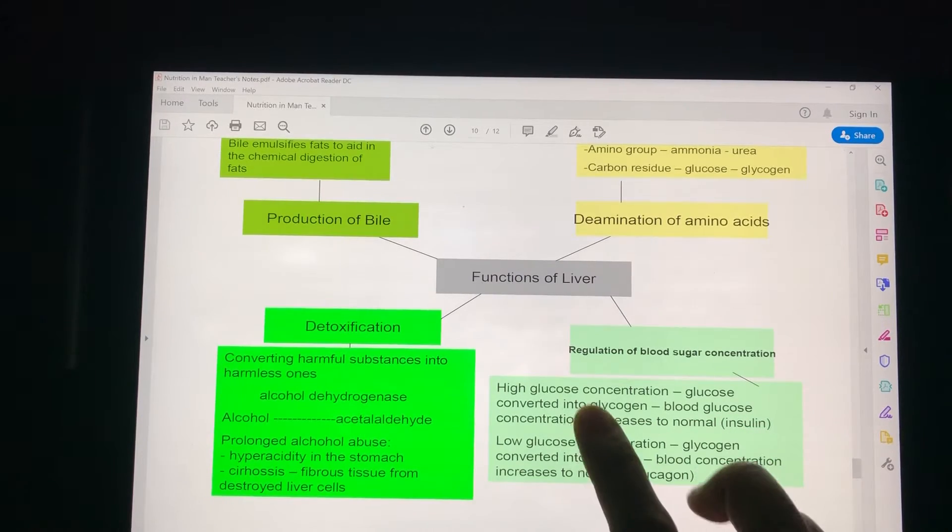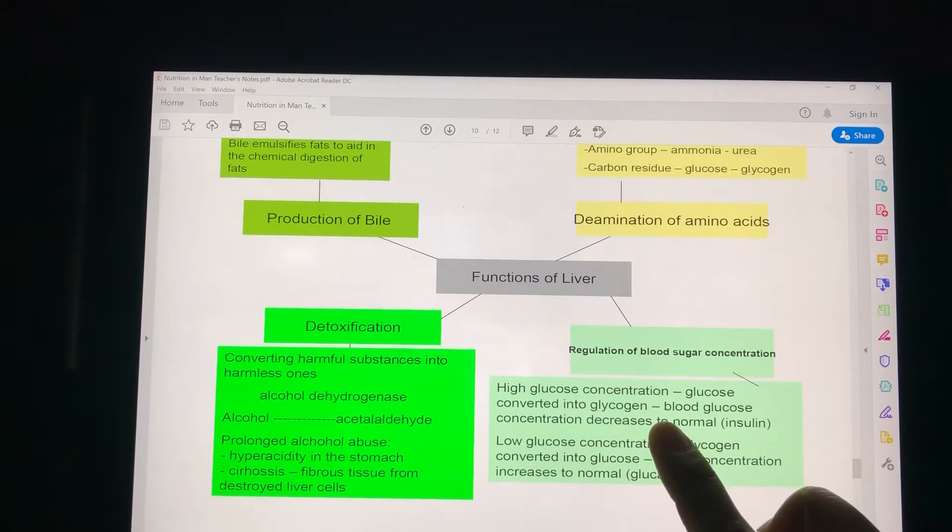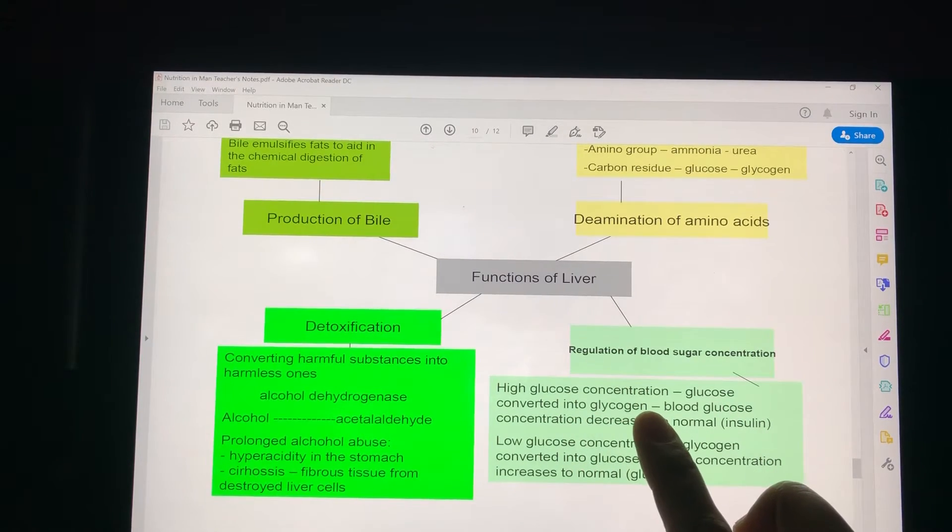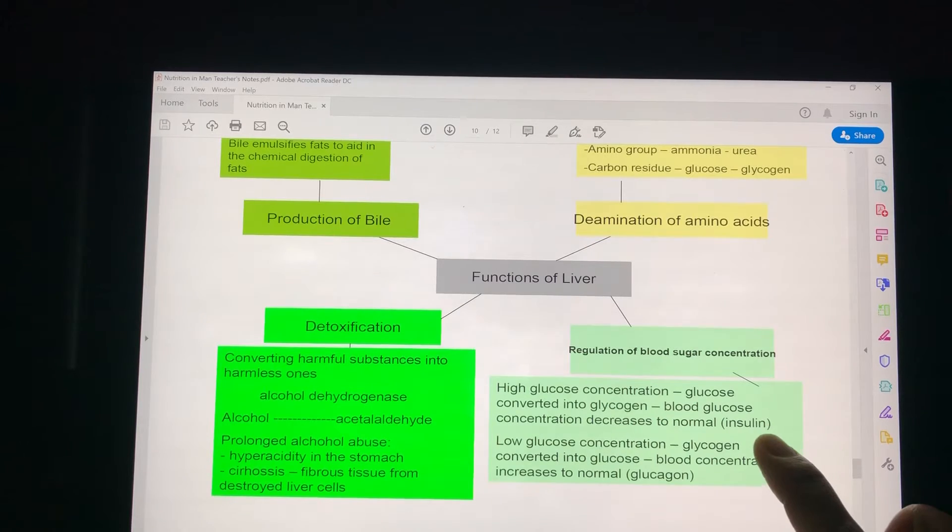Basically, when your glucose concentration is high, for example after a meal, the glucose that goes into the liver will be converted into glycogen and stored there. This is under the influence of insulin, which we will cover in a later chapter.